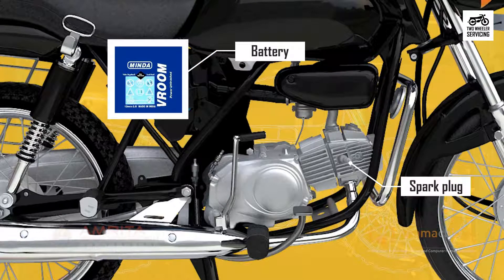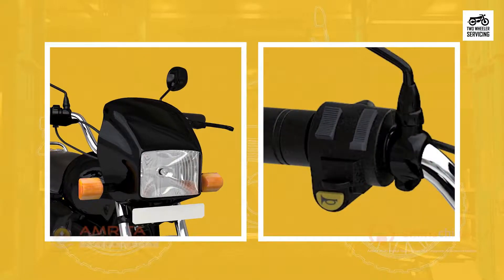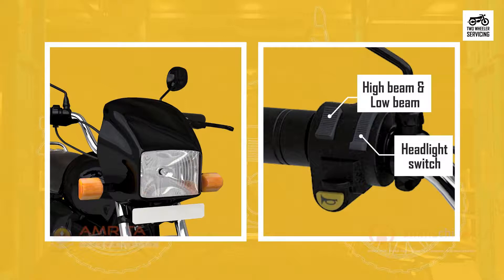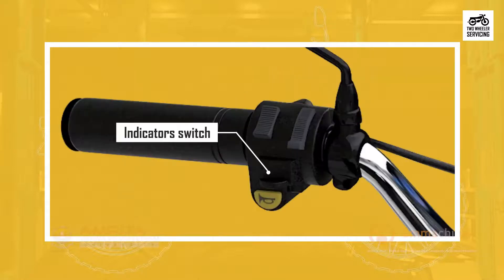The battery is concealed in an enclosure and supplies electricity to the various components. The main parts powered by the battery include: headlight or driving light for night driving, turned on using the headlight switch, with an option to alternate between high beam and low beam; and the brake light, which indicates to vehicles behind that brakes are being applied.